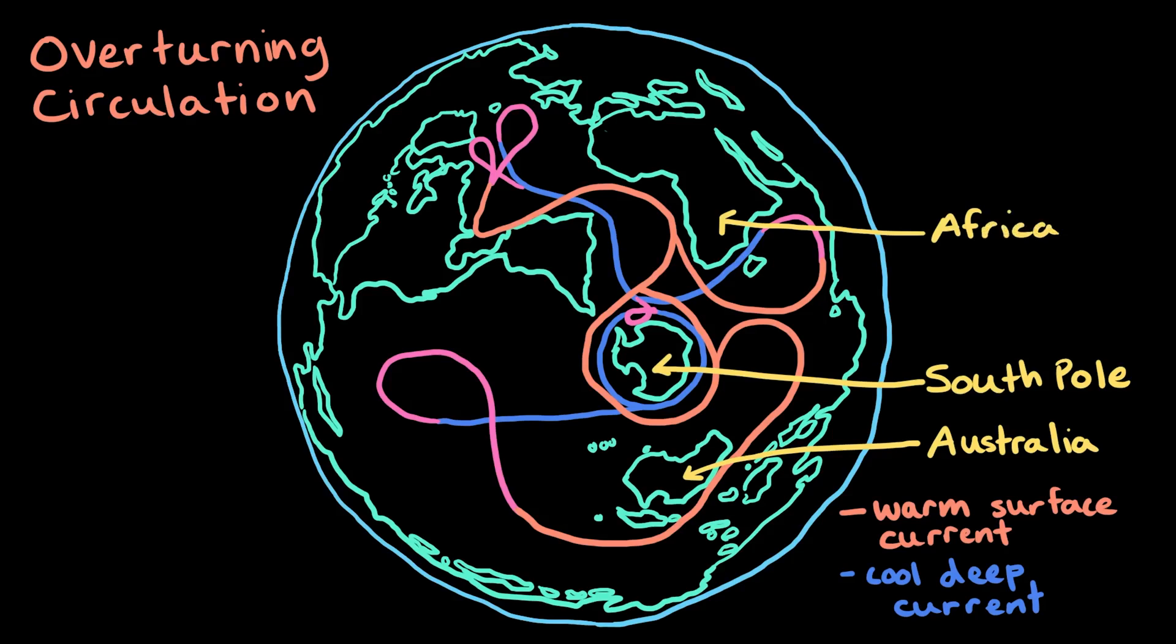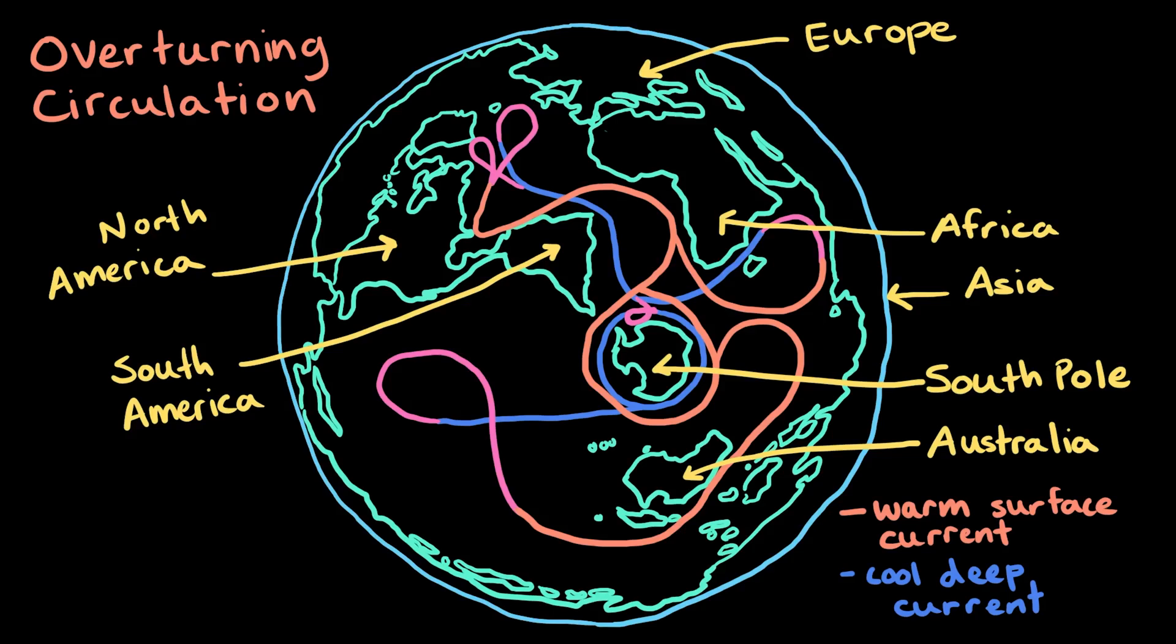So Australia and the southern tips of Africa and South America are closest to the center of the map, while Europe, most of Asia, and North America are at the edges.